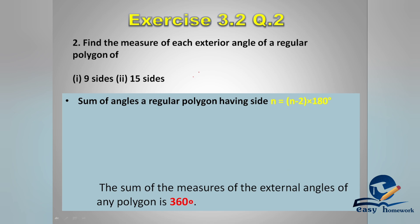The sum of angles of a regular polygon having n sides is equal to (n-2) × 180 degrees. This is the interior angles formula. The sum of interior angles is equal to (n-2) × 180. This is the first property.